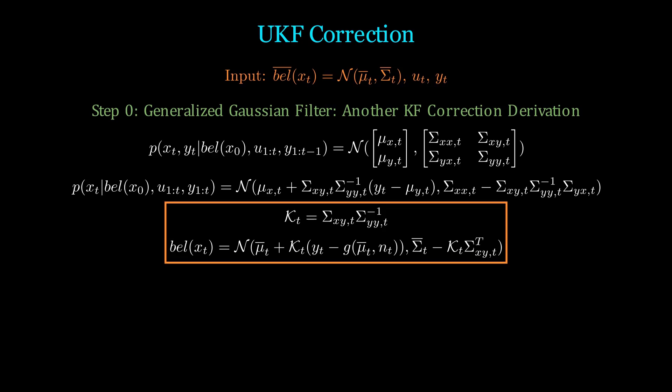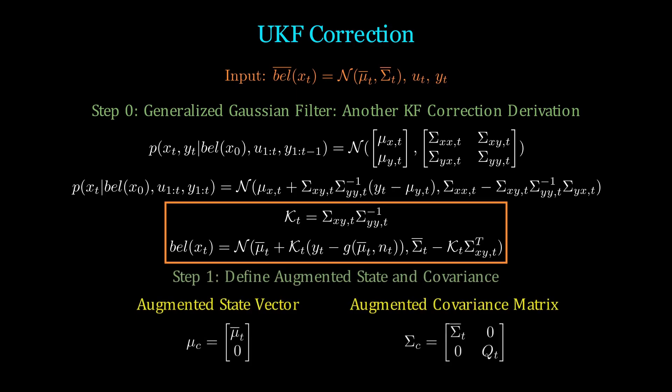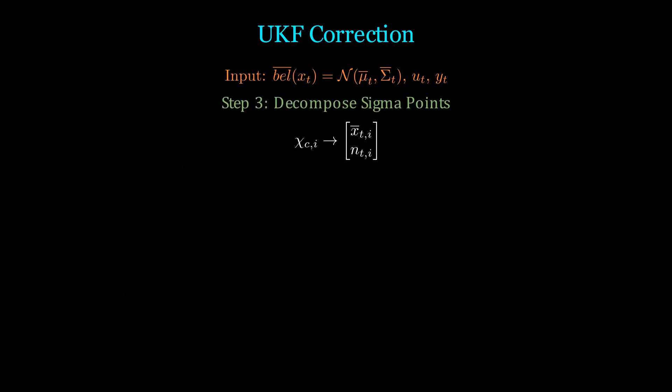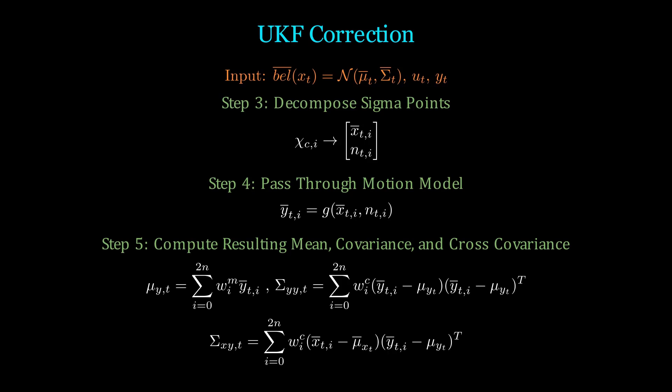So all we need to do is define line 1, which is the joint distribution between the state and measurement. Step 1 again is just about combining our state and noise information. We then construct our sigma points and decompose them into our state and noise samples. Following, we pass them into our sensor model. But when we reconstruct our mean and covariance for our measurements, we can also compute our cross covariance between our state X and the resulting measurement Y. Note that here the X samples are what we passed into the sensor model G. So the cross covariance is essentially modeling how our state X influences the measurement Y.